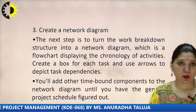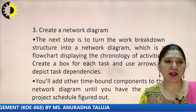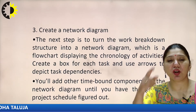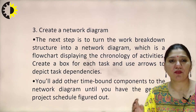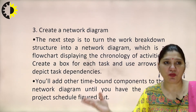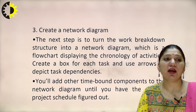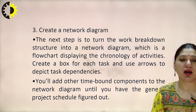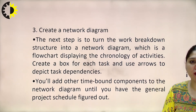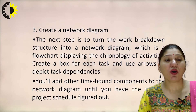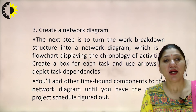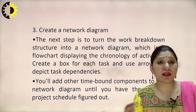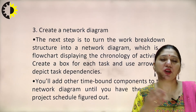The third step is the creation of a network diagram. The next step is to turn the work breakdown structure into a network diagram — a flowchart displaying the chronological order of activities. It is a simple network diagram having nodes and links, with connectivity from start point to end point. We have to create a box for each task and use arrows to depict task dependencies, then add time-bound components until we have the project schedule. We must see all paths from start to end and determine which path is most efficient for project completion.